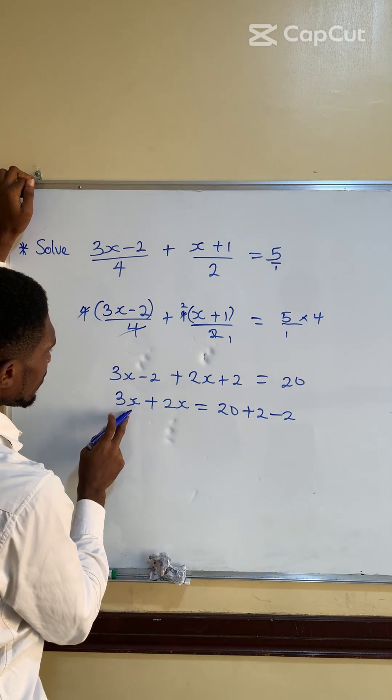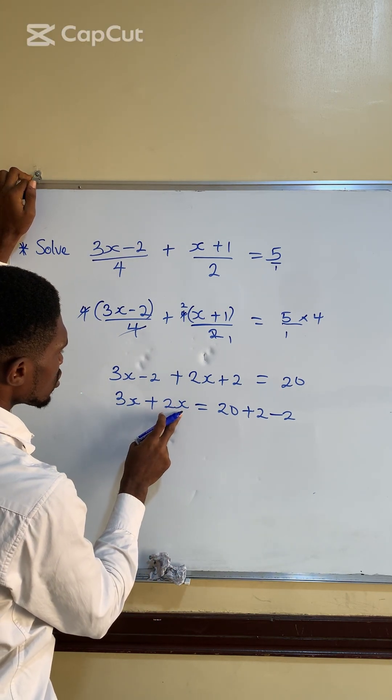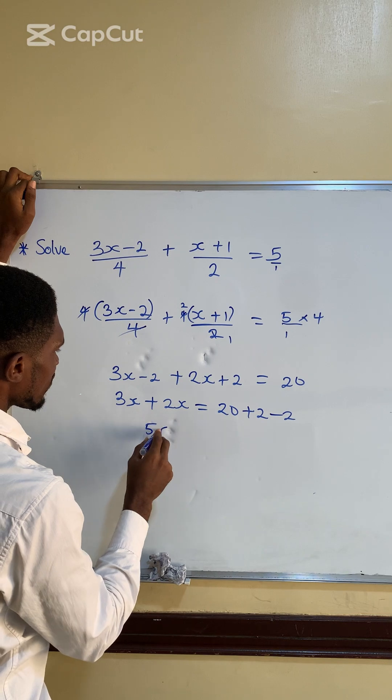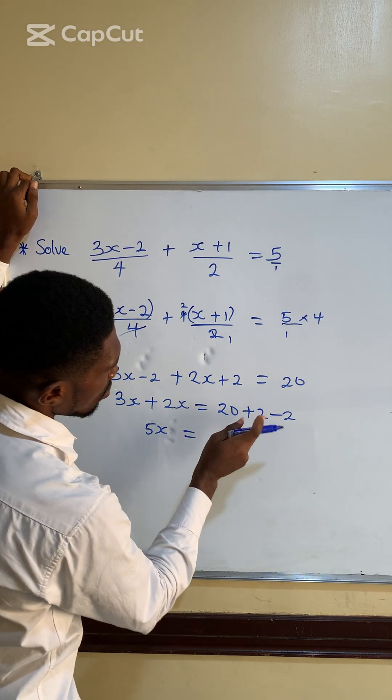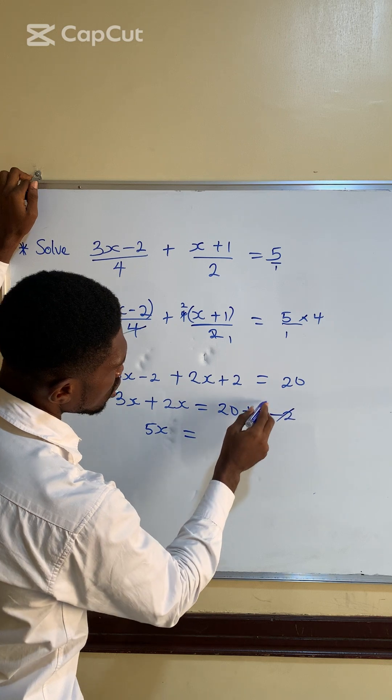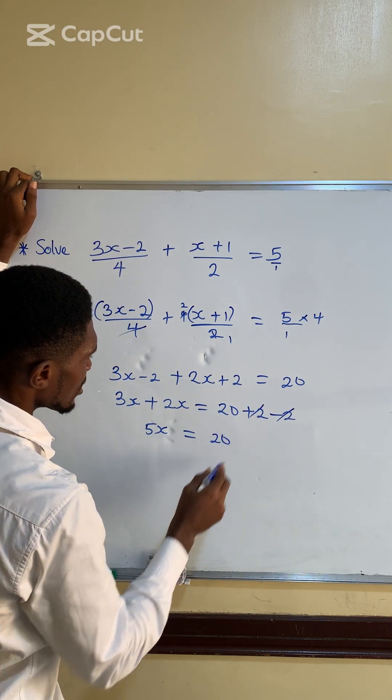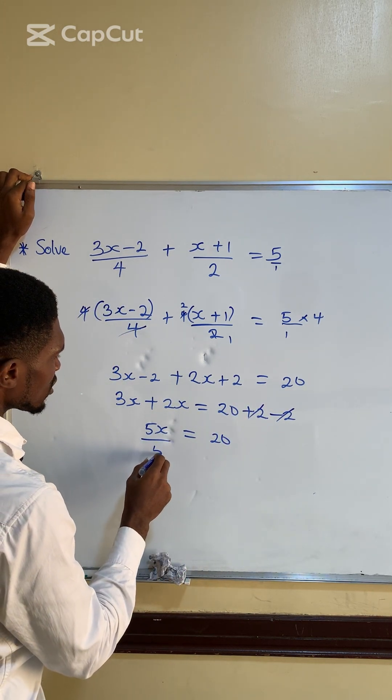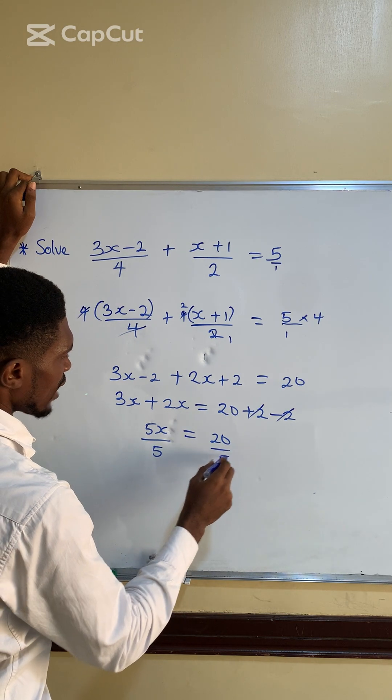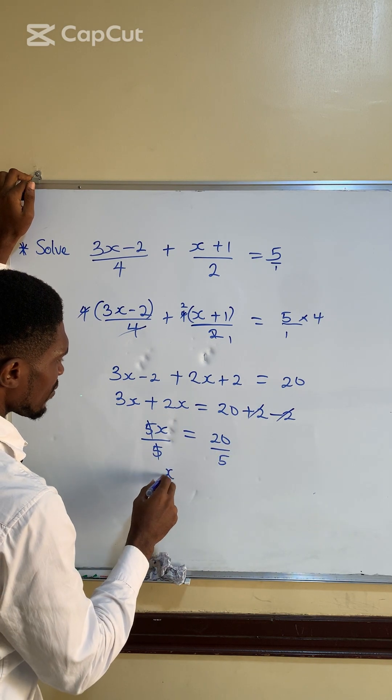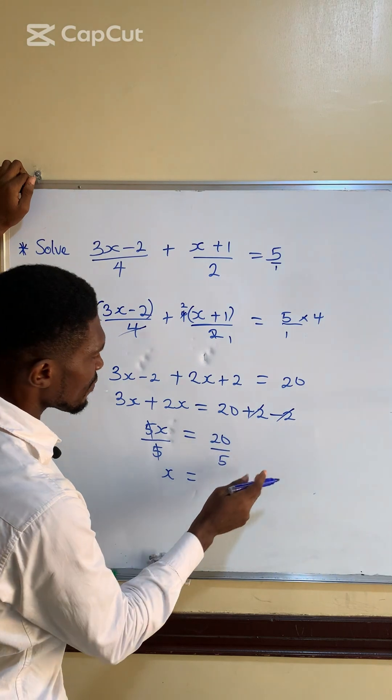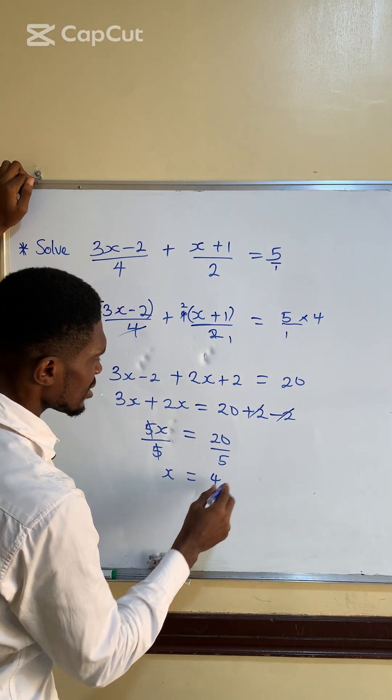So we'll have 3x plus 2x, which gives us 5x, is equal to... plus 2 minus 2 will cancel each other, so we'll have 20. Divide both sides by the coefficient of x, which is 5. 5 will cancel 5 and we'll have x is equal to 20 divided by 5, which is 4. This is the final answer.